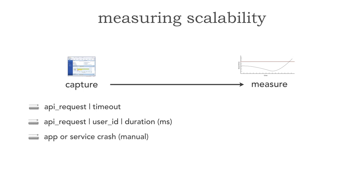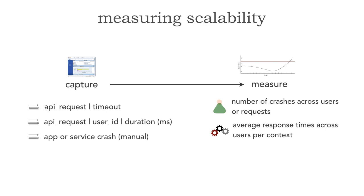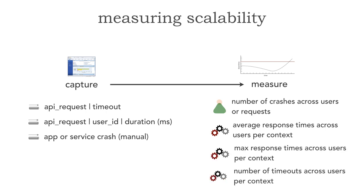Another thing to capture is an app or service crash. A lot of times this is manual. In most microservices ecosystems, we can leverage information coming out of service orchestrators such as Kubernetes to provide us that information, but a lot of times the capture is manual. What we can measure from that are the number of crashes across users or requests — are we seeing an increase in crashes as users grow? From performance, we can measure the average response time across users per any given context: the entire application, a particular domain group of services, or a particular service. We can also measure max response times and the number of timeouts. These four measurements allow us to both detect scalability issues and demonstrate scalability within our application.